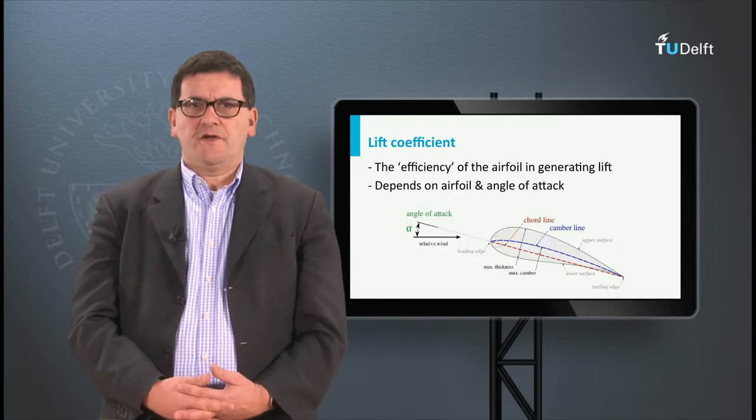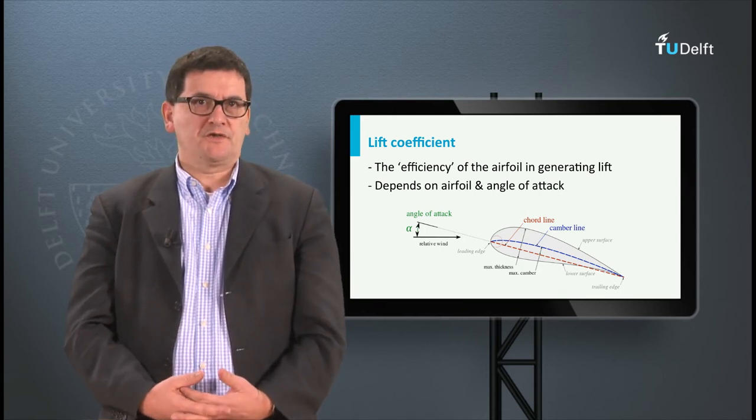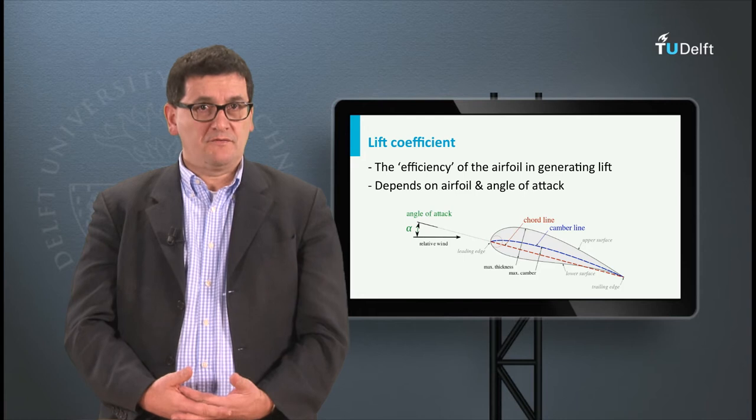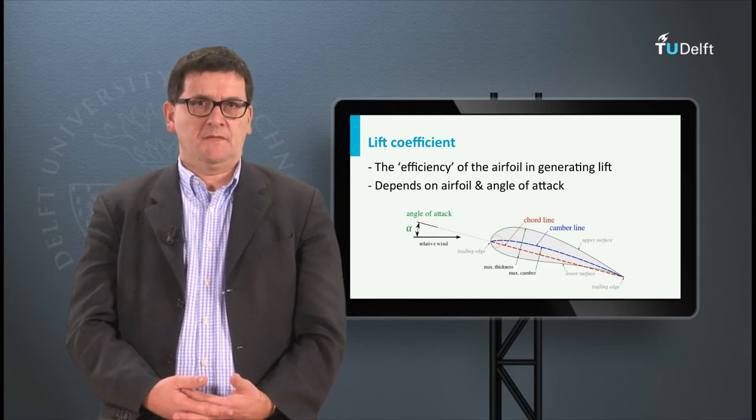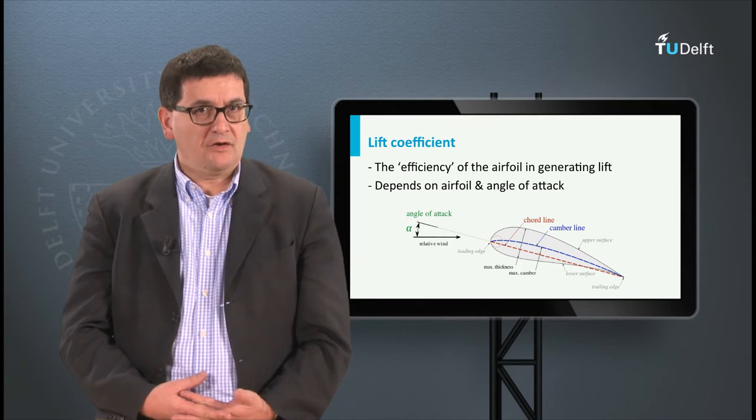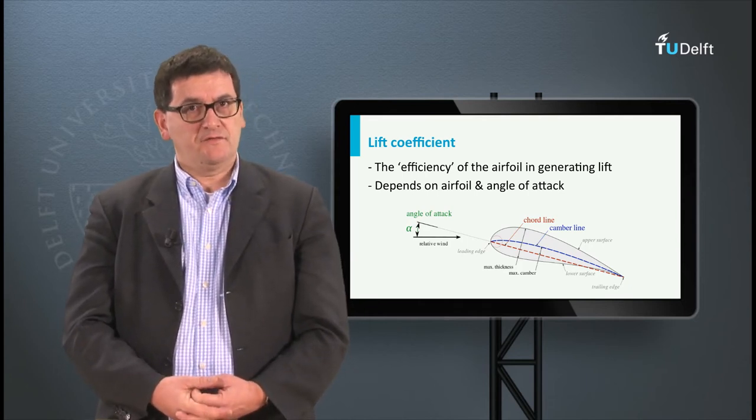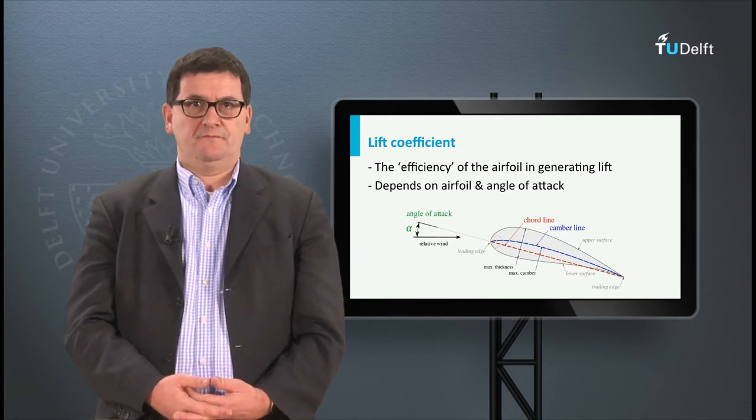The lift coefficient, which is dimensionless, includes a number of aspects of a particular wing like the geometry, the airflow around the wing, etc. Key parameters influencing the lift coefficient are the angle of attack and the geometry of the airfoil, which is the cross-section of the wing in flying direction. The airflow is usually not symmetric.